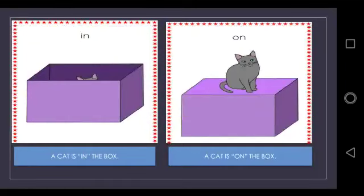In first picture, a cat is in the box. The word in tells us where the cat is. The cat is in the box.